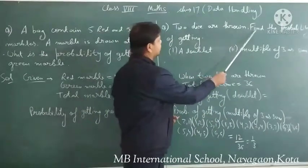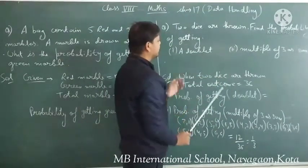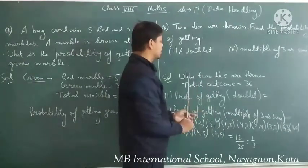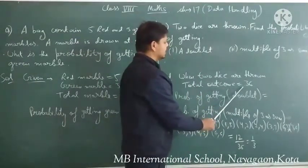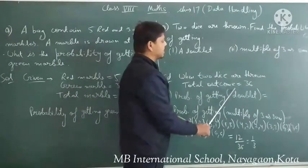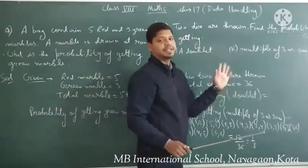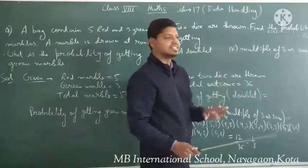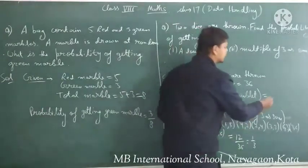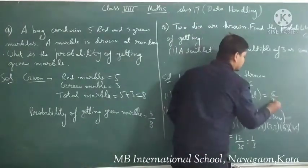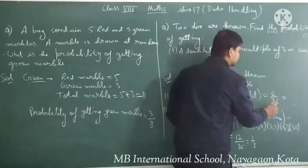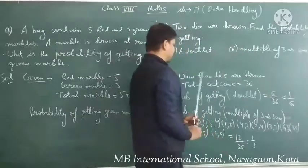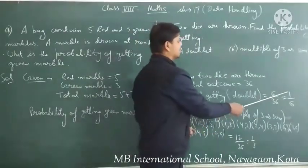2 dice are thrown, find the probability of getting a doublet. When 2 dice are thrown, total number of outcomes is 36. A doublet means both dice show the same number: (1,1), (2,2), (3,3), (4,4), (5,5), and (6,6). So total doublets are 6. Probability of getting a doublet is 6 upon 36, which simplifies to 1 upon 6.